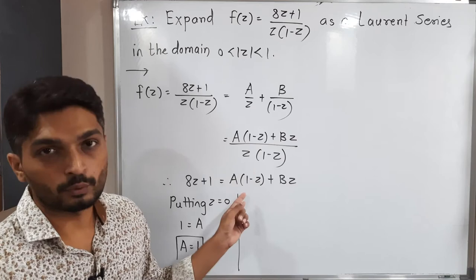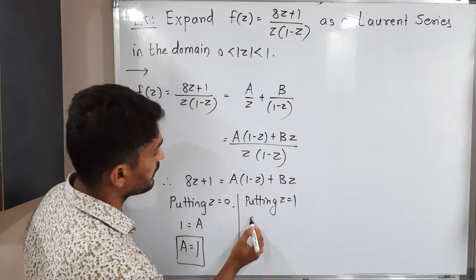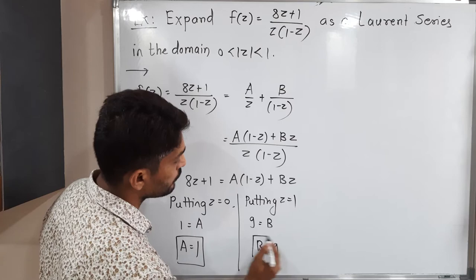Now we have to find value of b. To find value of b, we have to make this term 0. I can simply put z is equal to 1. So let us put z is equal to 1 everywhere. Here 9, this one is 0 and this one is b only. So b is equal to 9. In this way, we got values of a and b.